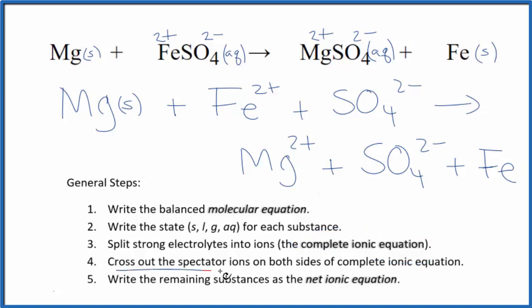Now we can cross out spectator ions. We have magnesium and then the magnesium ion. Those are different. The iron 2 ion, then just iron metal. Those are different. But the sulfate, SO4 2 minus, those are exactly the same. Get rid of those.